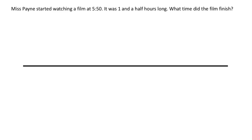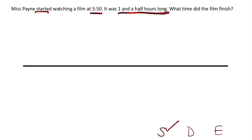Miss Payne started watching a film at 5.50. It was one and a half hours long. What time did the film finish? For every question, we need to know whether we have been given the start information, duration information, and end information. She started watching at 5.50, so yes, we have the start. It was one and a half hours long — that's the duration. But we don't know the end, the finish time. So let's put that onto our number line.